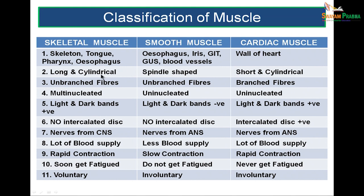Regarding structure: in skeletal muscle, fibers are long and cylindrical; in smooth muscle they are spindle-shaped; in cardiac they are short and cylindrical. Branching pattern: skeletal and smooth are unbranched, whereas cardiac branches. Skeletal is multinucleated; both smooth and cardiac are uninucleated. Banding pattern is seen in skeletal and cardiac but not in smooth muscle. Intercalated discs are present only in cardiac muscle.